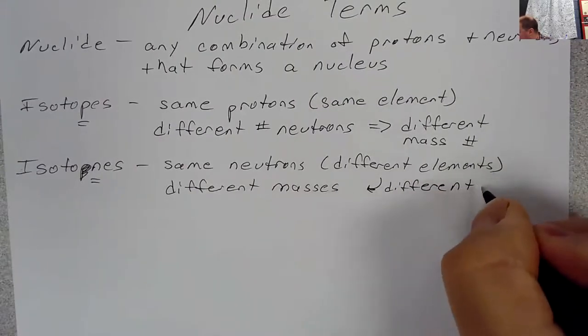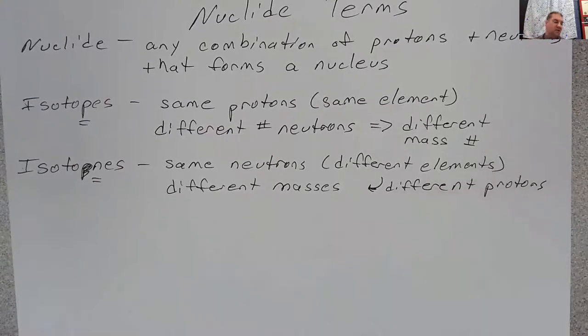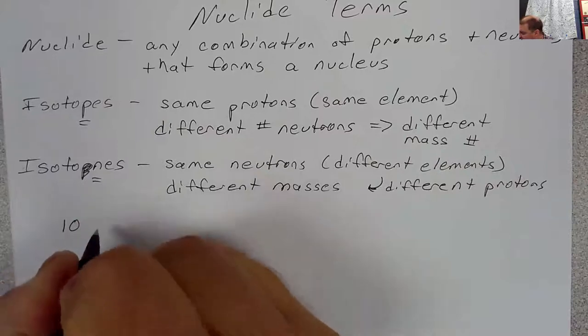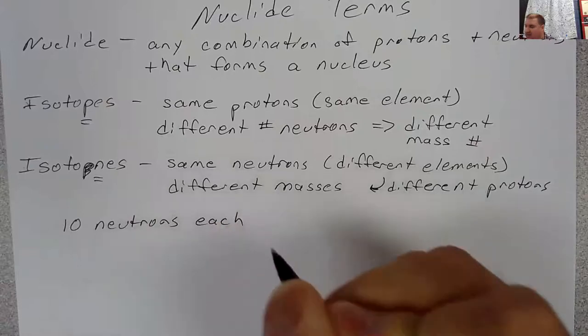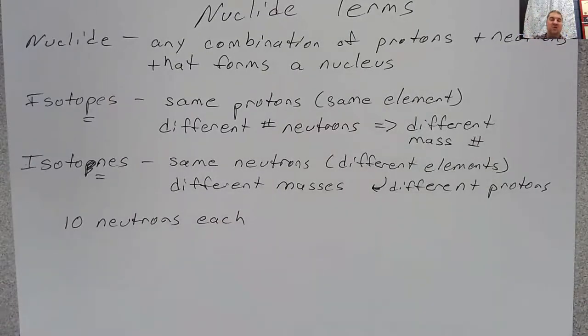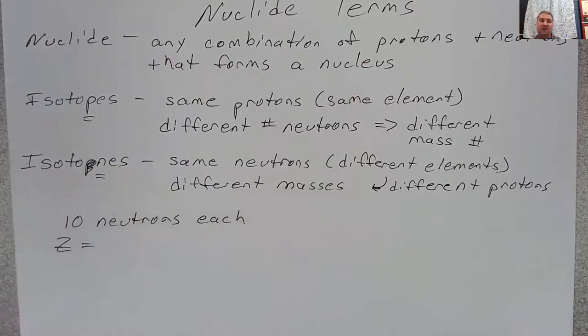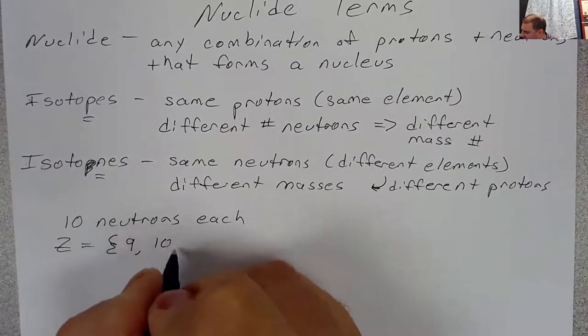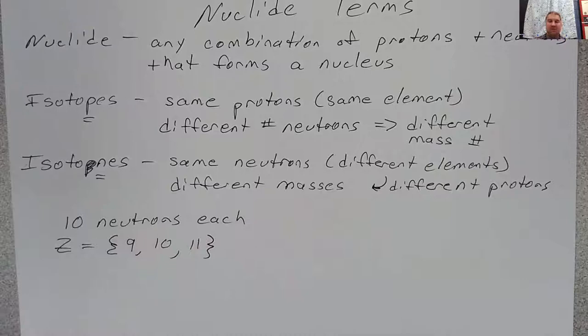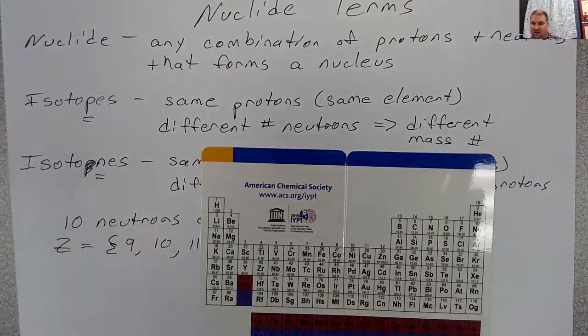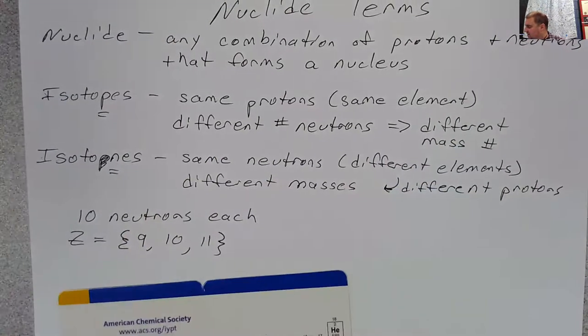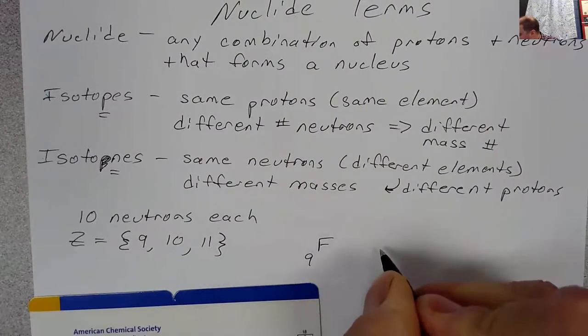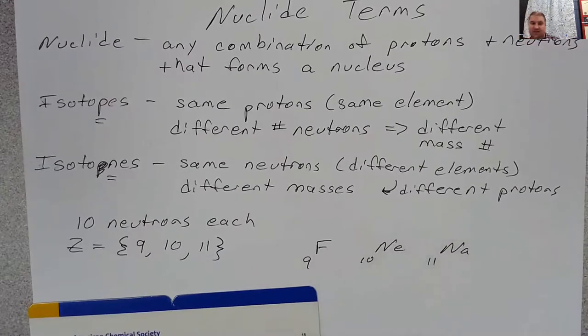So what are some examples then of isotones? Well, again, we can come back to nuclides. We can take almost any combination, but let's for now, let's just go ahead and say that they have 10 neutrons each. So for such a small number of neutrons, a reasonable number of protons for atoms that might actually exist would be close to this. So their Z's, their atomic numbers, could be 9, 10, or 11. So let's look at those elements. 9 would be fluorine, 10 is neon, and 11 is sodium. So fluorine, 9, neon, 10, sodium, 11. Those are the atomic numbers.